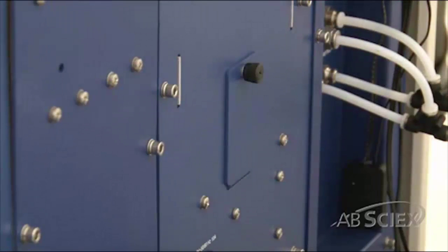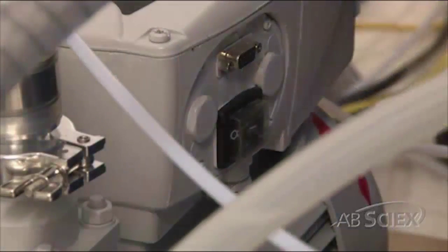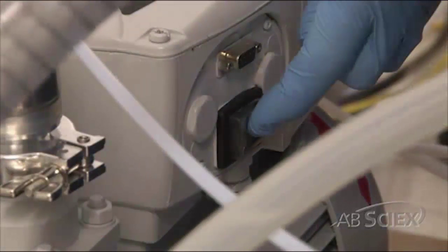Replace the cover over the circuit breaker switch. Turn on the roughing pump. Turn on the instrument power switch on the left side of the instrument.